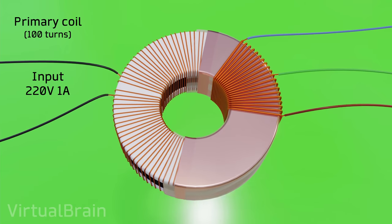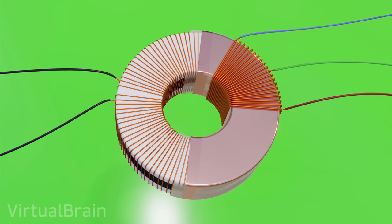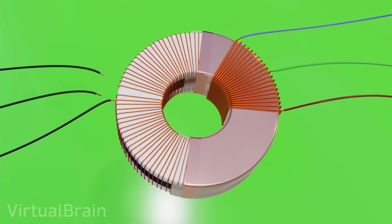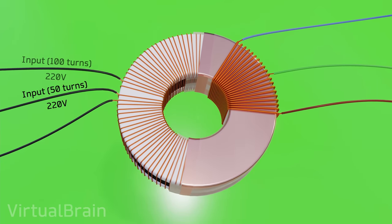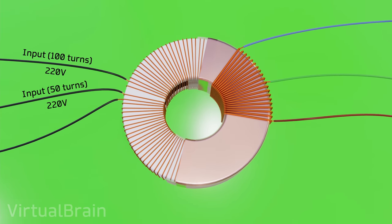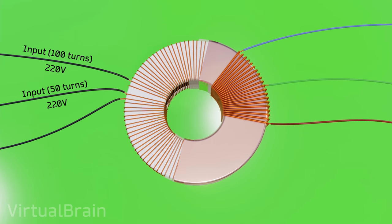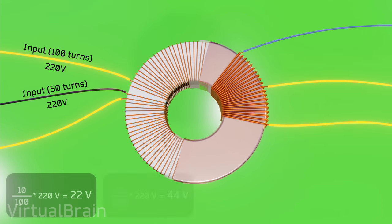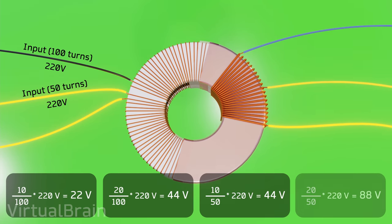Furthermore, this logic can also be applied in the primary winding. If we had a connection at 50 turns and another at 100 turns, but we still use the 220 input volts, now we will have 4 possible output voltage combinations: 22, 44, 44, and 88 volts.